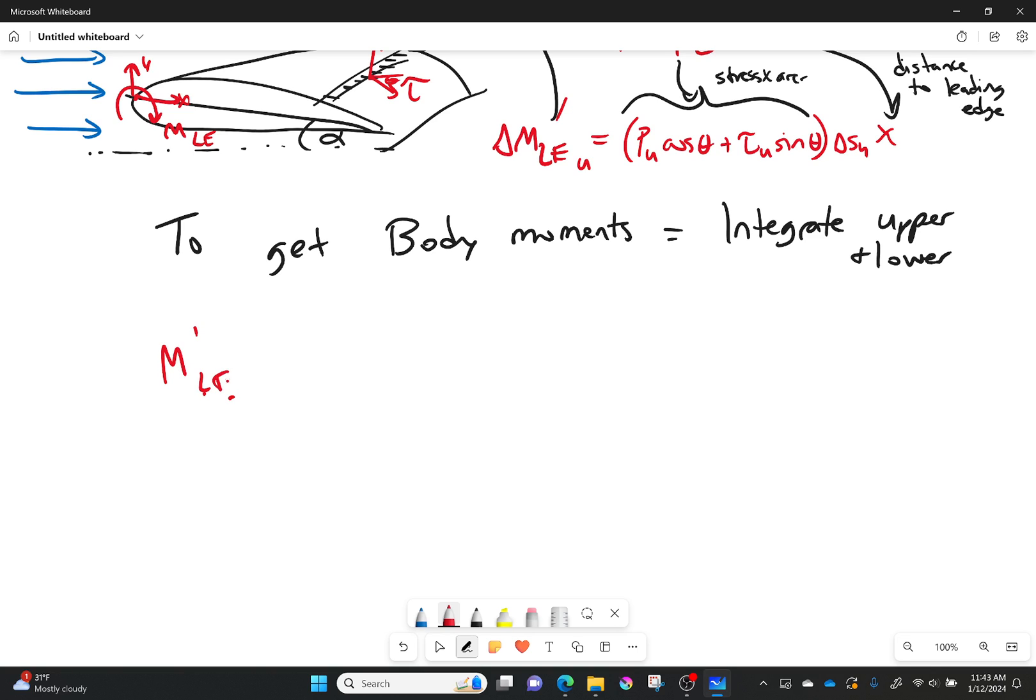So our moment at the leading edge per unit span is going to be equal to the integral from the leading edge to the trailing edge. The pressure on the upper times cos θ plus the shear stress on the upper times sin θ times x, which is the distance to the leading edge, minus the pressure on the upper times sin θ minus the shear stress on the upper times cos θ times y. So that's only for the upper surface right here.